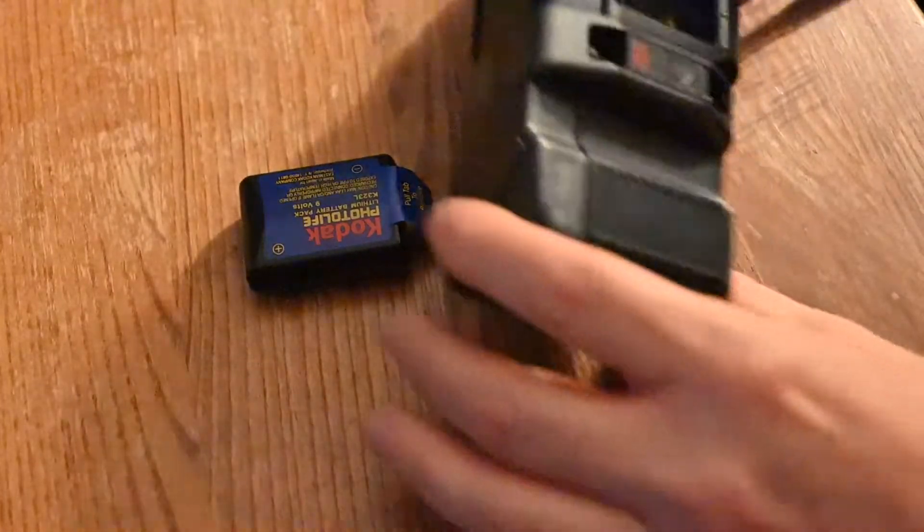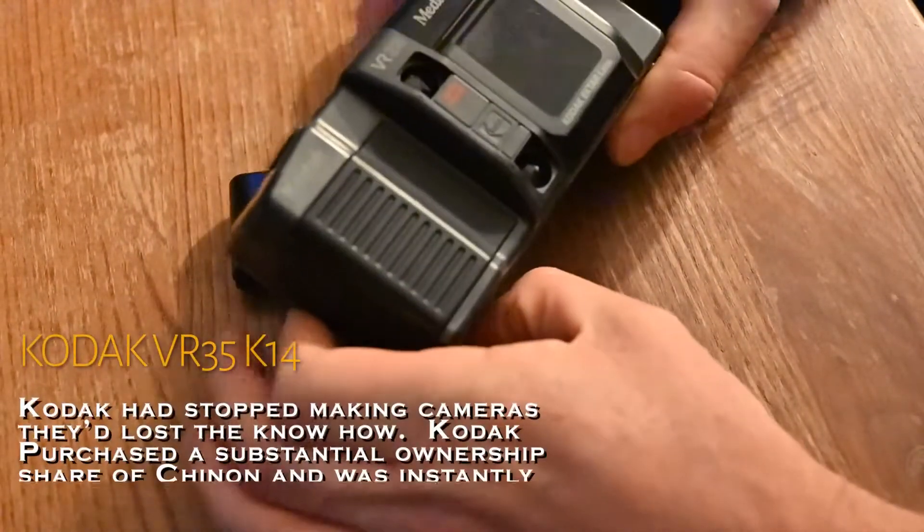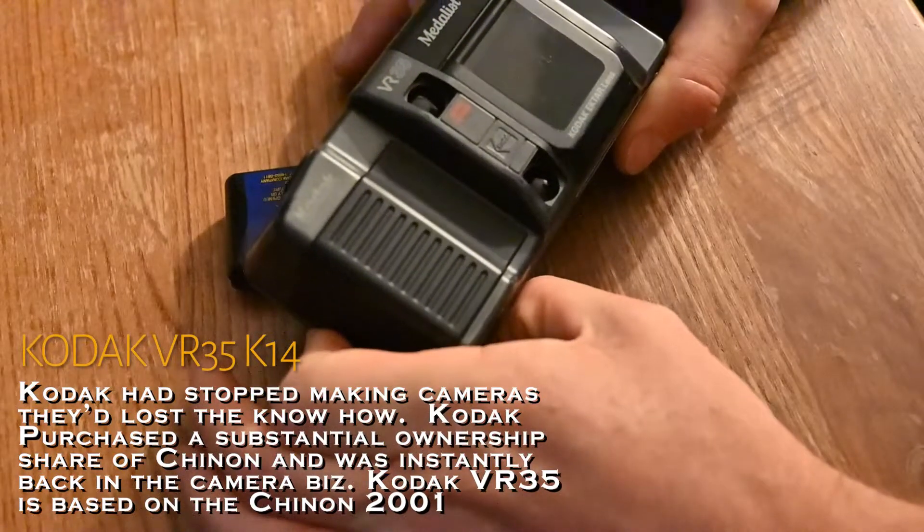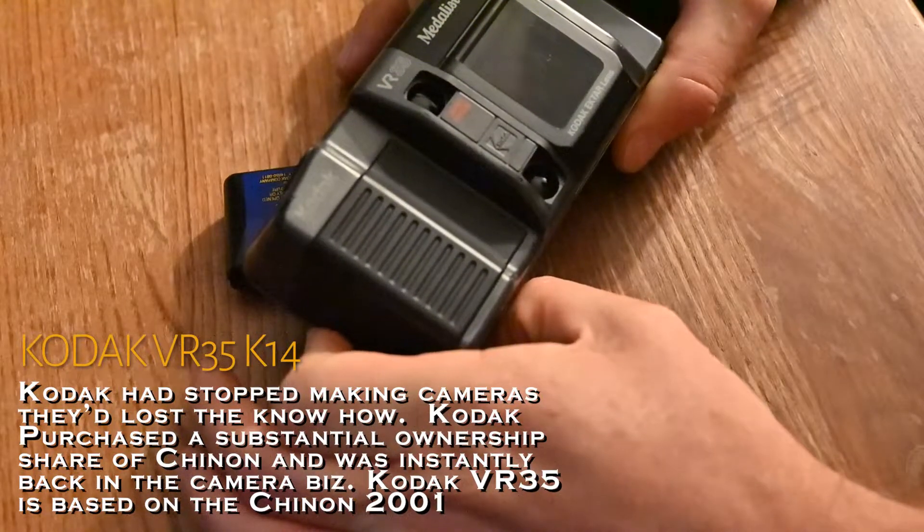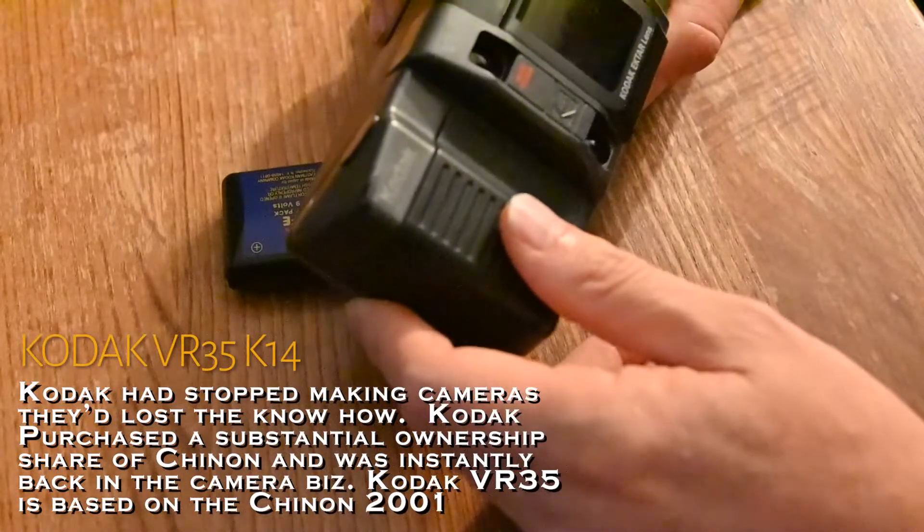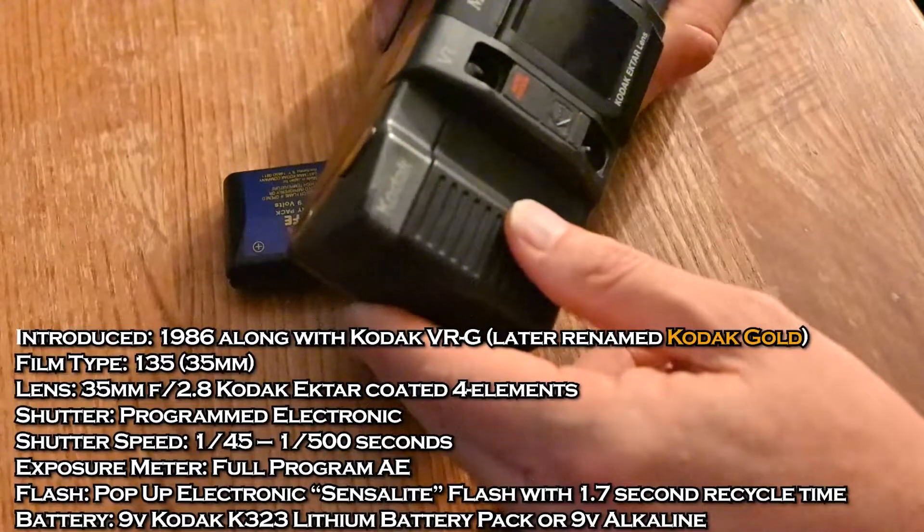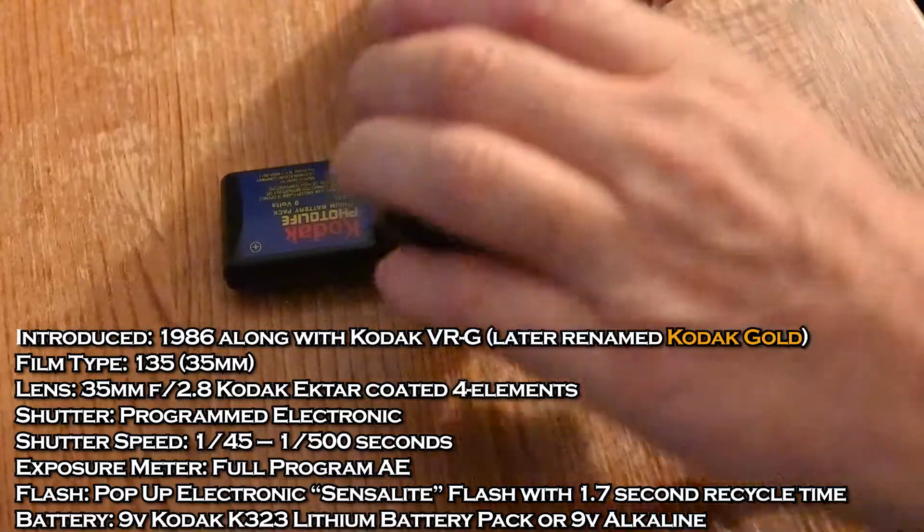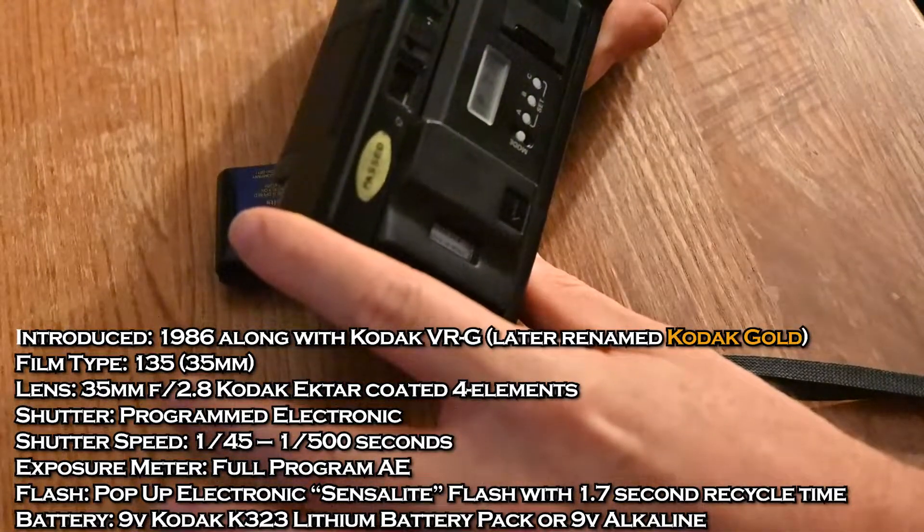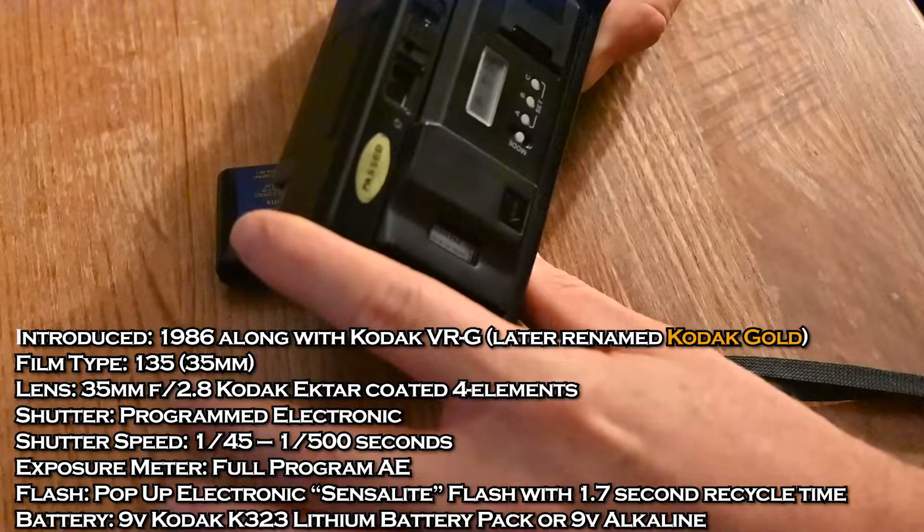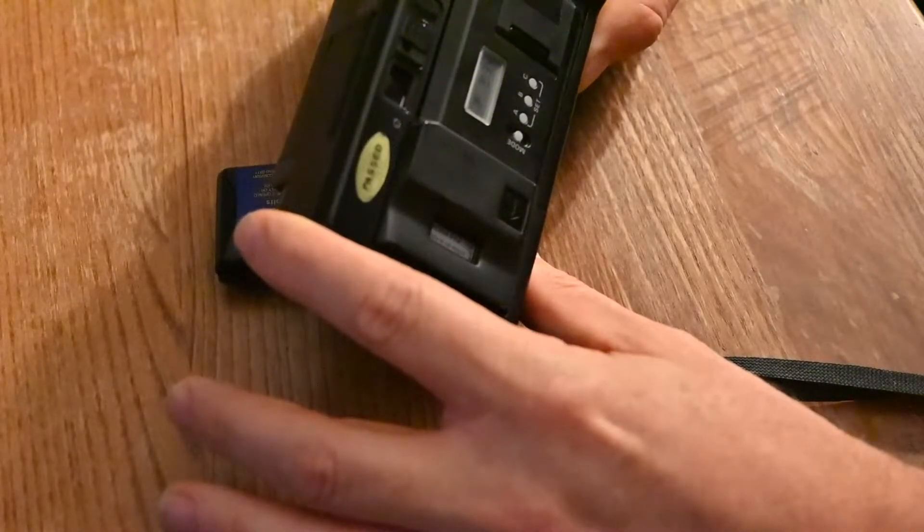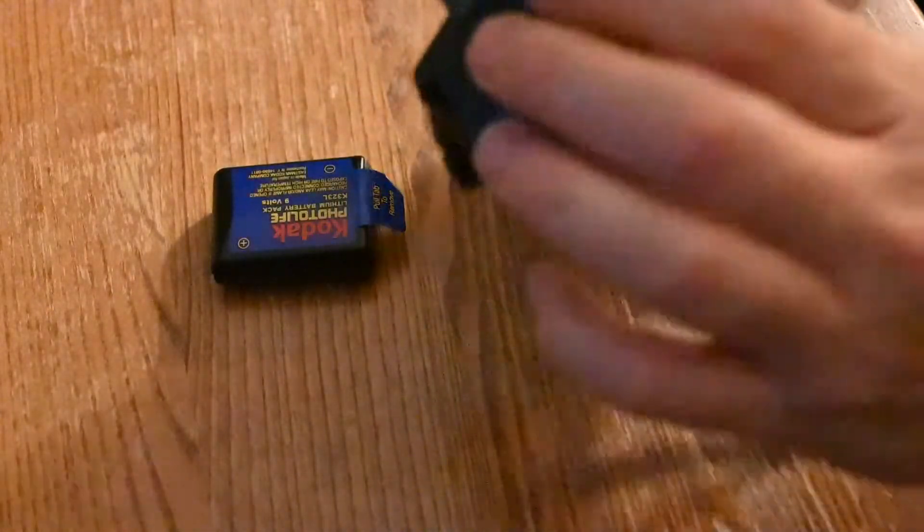I don't know what's inside this but it was inside this camera which is a Kodak VR35 Metalist. Technically this is the Kodak VR35 K14. It's a rebranded Chinon 2001 and Kodak bought Chinon for the sole purpose of acquiring their camera manufacturing.